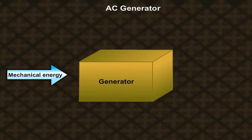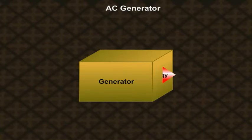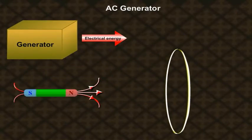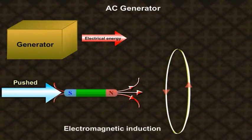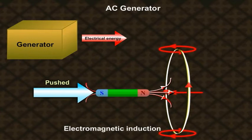A generator converts mechanical energy into electrical energy. It is done by the phenomena of electromagnetic induction. We shall use this concept and construct an AC generator.